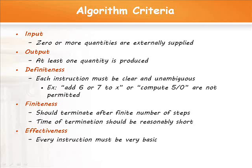The third one is definiteness. Definiteness says that each instruction in the algorithm must be clear and unambiguous. There should not exist any instruction which creates ambiguity in the algorithm. For example, if we consider the instruction add 6 or 7 to x, it leads to two forms of instruction, either 6 plus x or 7 plus x, which leads to ambiguity.